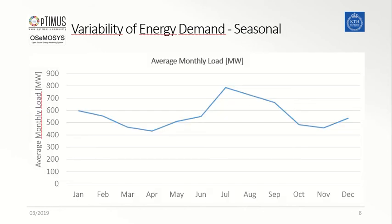Here is an example of a seasonal variation of the demand across one representative year. The graph clearly shows how, in this case, the demand tends to be higher during the summer months of June, July, August, and September, and instead is almost stable across the rest of the year, with a slightly lower demand during springtime.